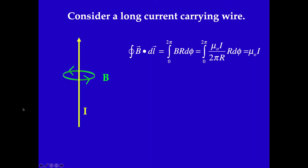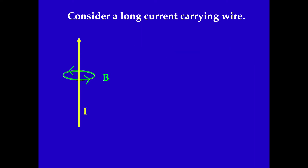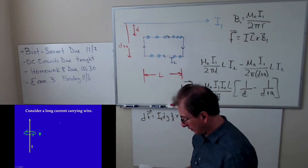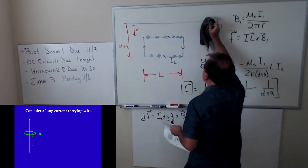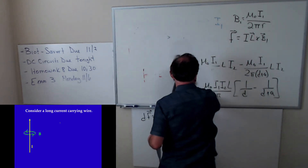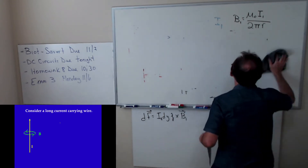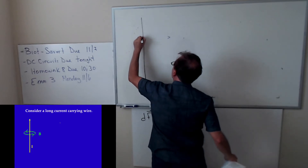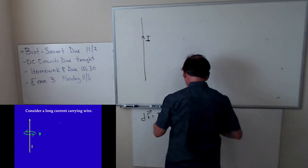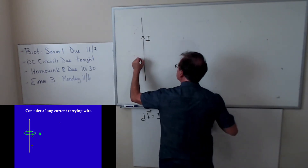Now I want to talk about something called Ampere's Law. Imagine you have a long current-carrying wire. We know that the magnetic field due to the current-carrying wire is basically given by a known expression. You have a wire carrying current I, and it sets up a magnetic field that circulates around the wire, making perfect circles.